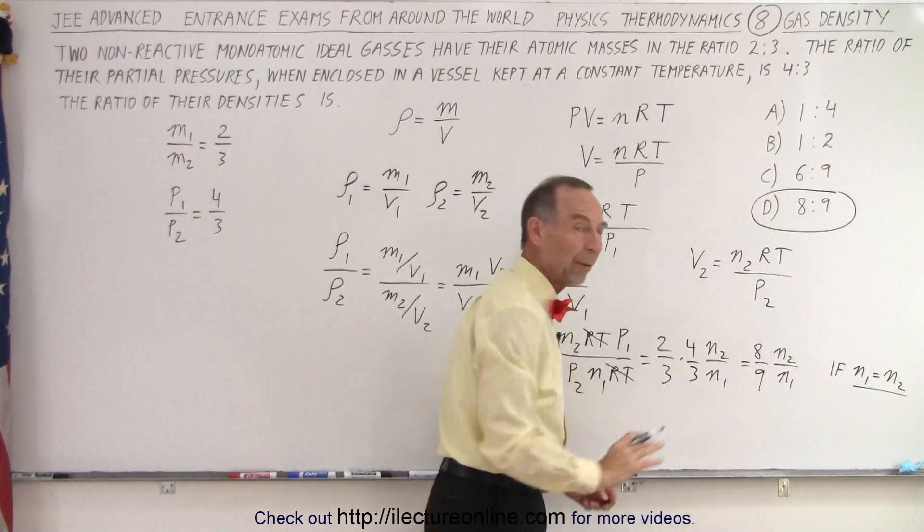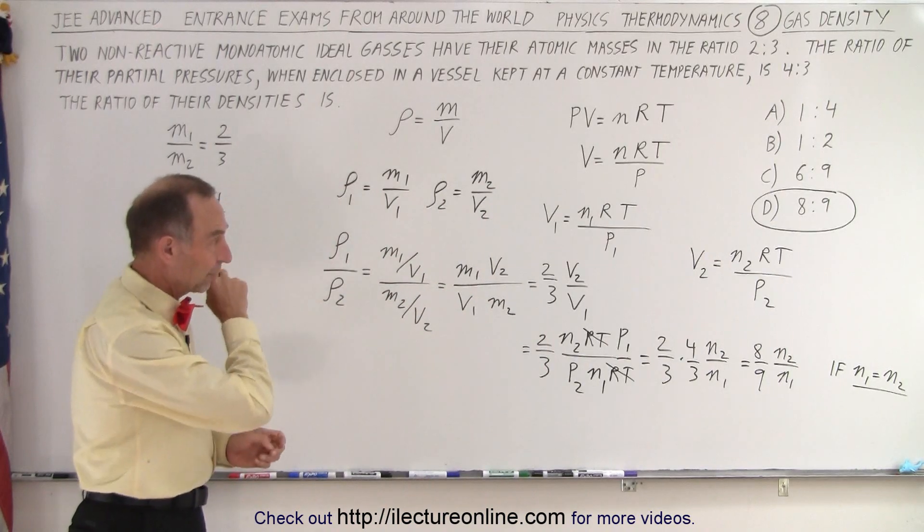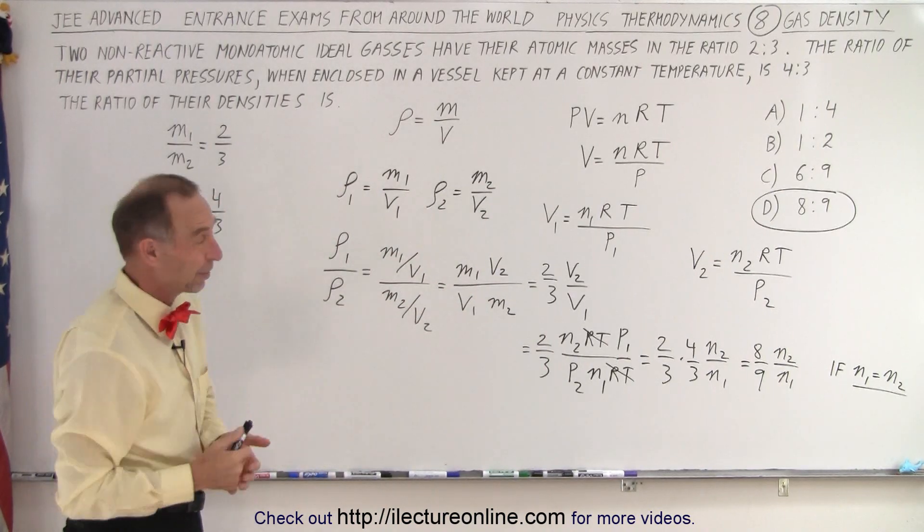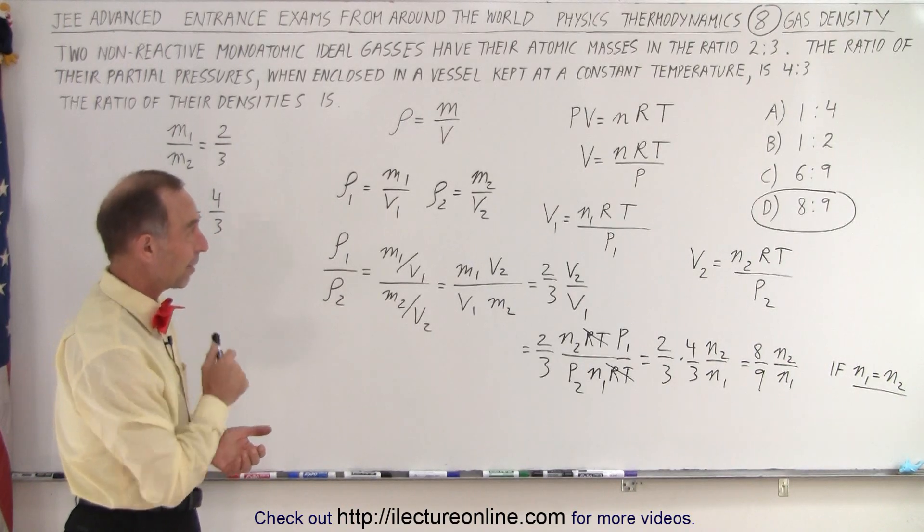Then notice that the ratio 8 divided by 9 is indeed answer D. And so that's probably the right assumption. 8 over 9 would then be the right answer. And so the answer is D. Turns out that's what they told us. Answer D is correct for this problem. So that is how it's done.